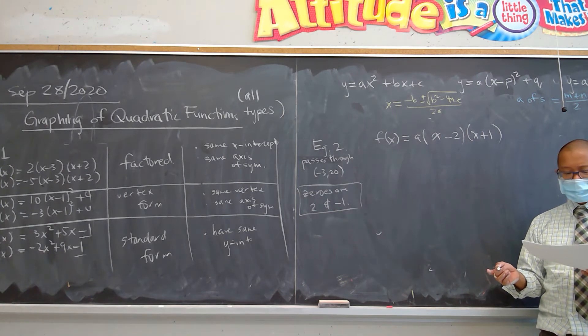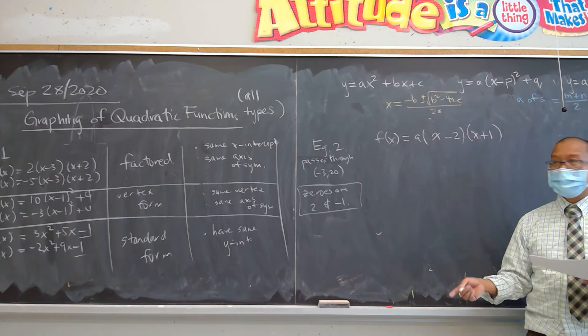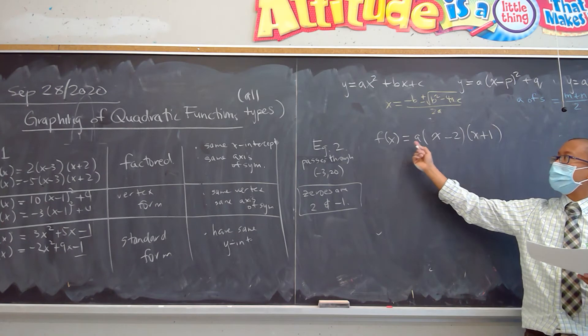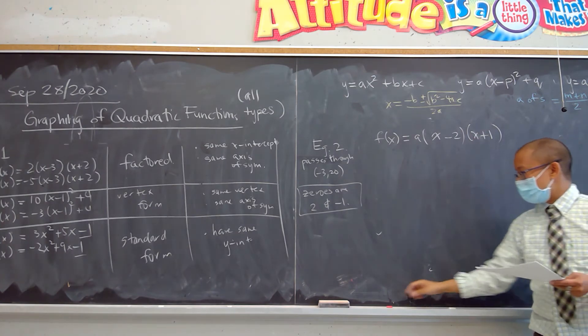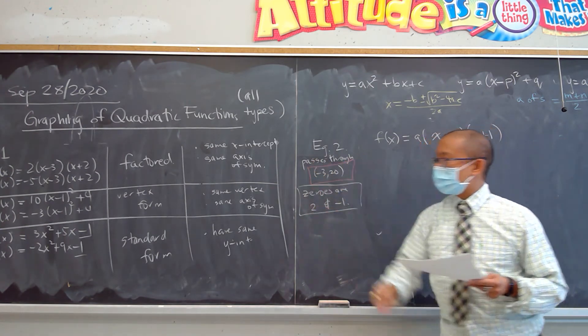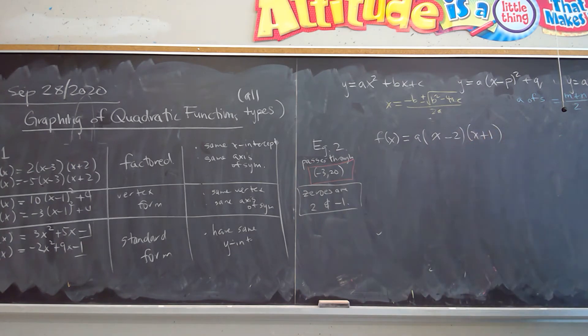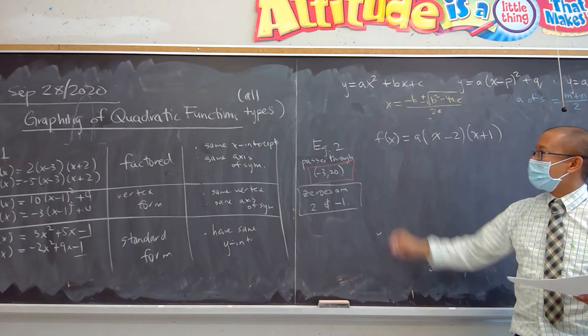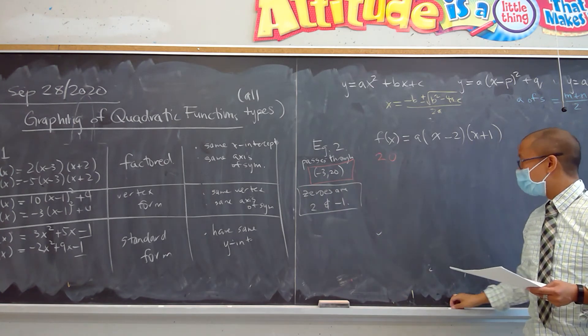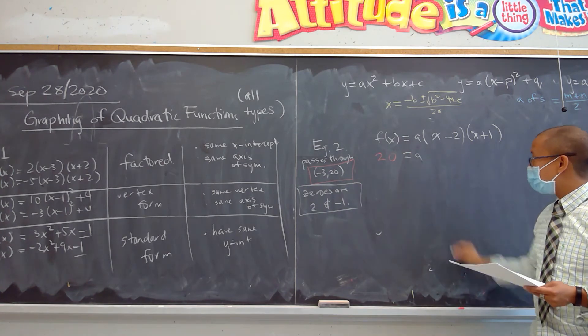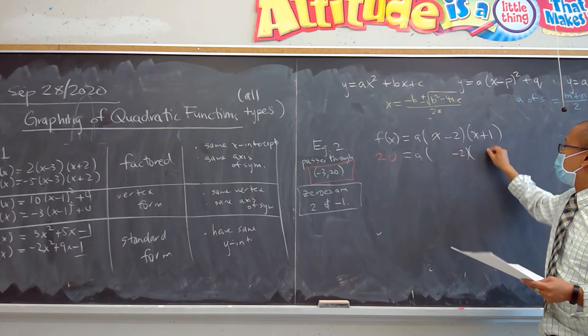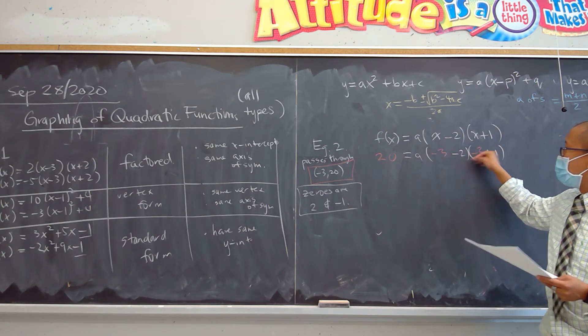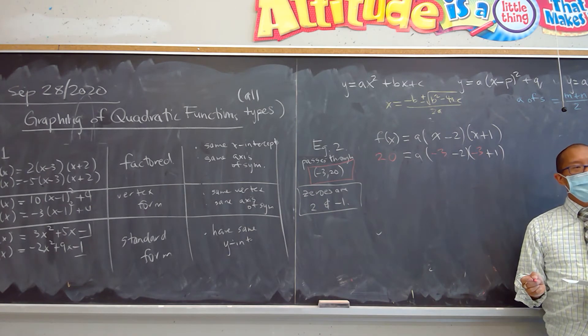I'll just walk us through. I think since we're given the zeros, out of the three types here, I think a lot of you realize the factored form is probably going to be a good approach. It's not the only way, but it can lead a lot of students to success. So let's just write that out. f(x) equals a times (x minus 2)(x plus 1). Before we continue, we're okay with that?